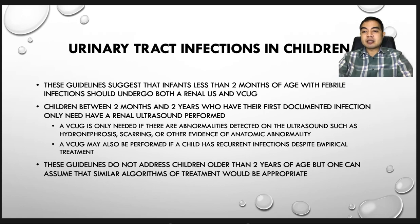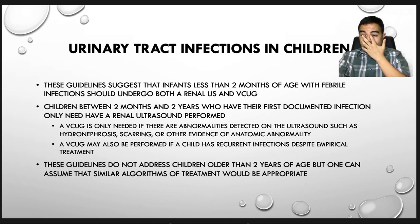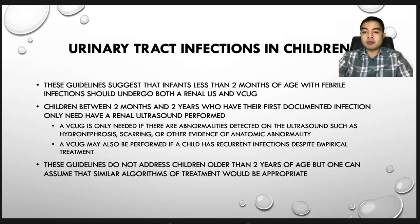The guideline suggests that infants less than 2 months of age with febrile infection should undergo both renal ultrasound and VCUG. Children between 2 months and 2 years who have their first documented infection only need renal ultrasound. A VCUG is only needed if there are abnormalities on ultrasound such as hydronephrosis, scarring, or other anatomic abnormality, or if a child has recurrent infection despite empirical treatment. These guidelines do not address children older than 2 years, but similar algorithms should be appropriate.